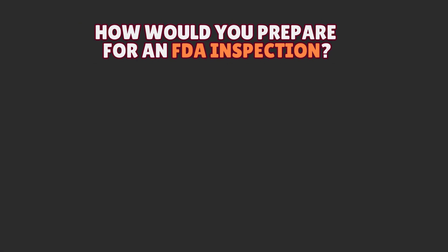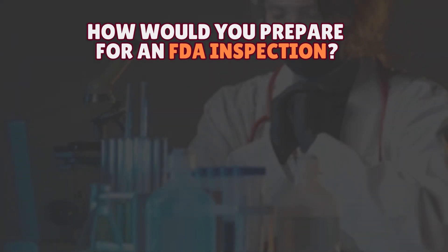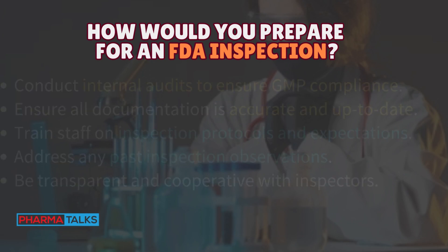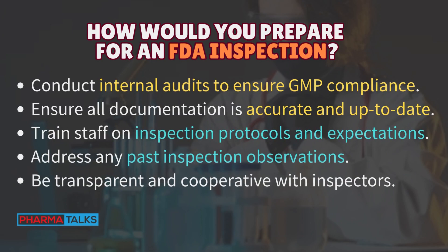Ensuring compliance with industry regulations: How would you prepare for an FDA inspection? Conduct internal audits to ensure GMP compliance. Ensure all documentation is accurate and up-to-date. Train staff on inspection protocols and expectations. Address any past inspection observations. Be transparent and cooperative with inspectors.